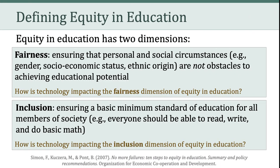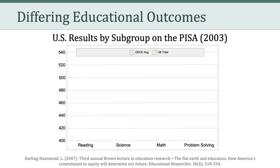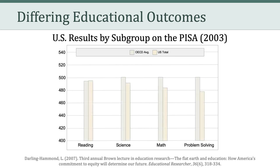Last week, we left off talking about the two dimensions of equity in education, fairness and inclusion. And we contemplated how technology is impacting both of those dimensions. I want you to keep that in mind as we move forward to talk about some of the points raised in the Darling-Hammond 2007 article. Darling-Hammond shares with us the U.S. results by subgroup on the 2003 Program and International Student Assessment, also known as the PISA. Let's take a look at how the U.S. does, on average, compared with the other 35 countries included in the PISA assessment. That's labeled as the OECD, which stands for the Organizations for Economic Cooperation and Development, which helps administer and oversee the PISA assessment.